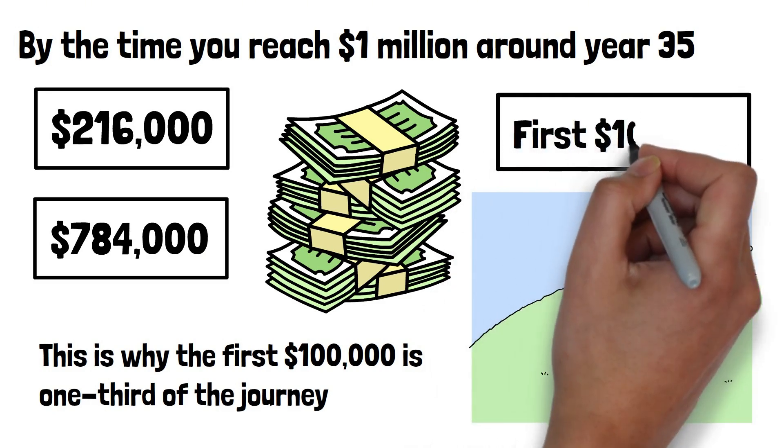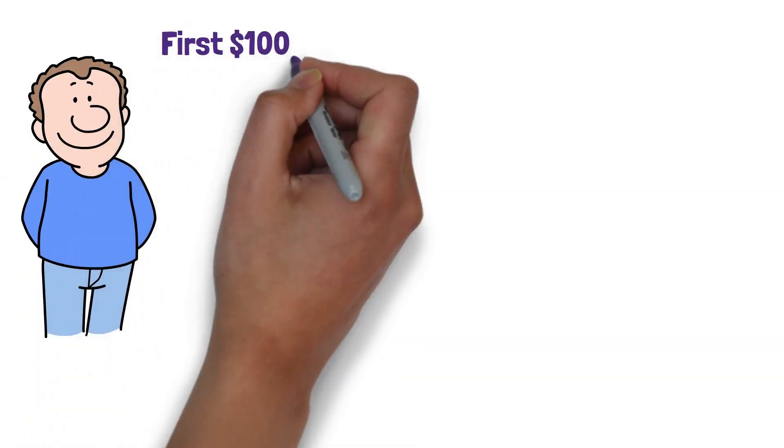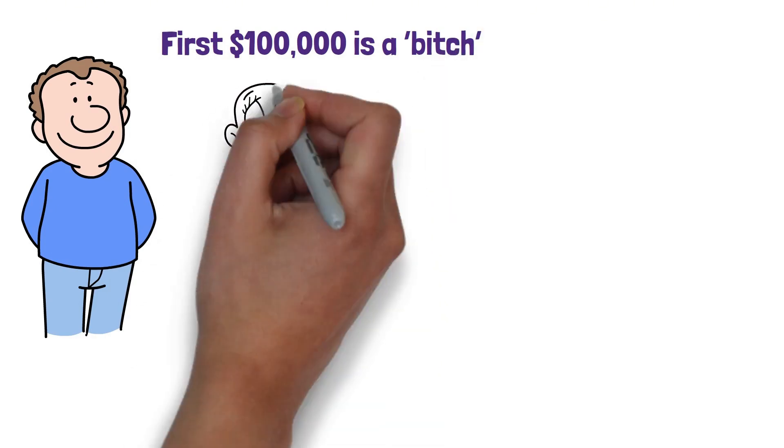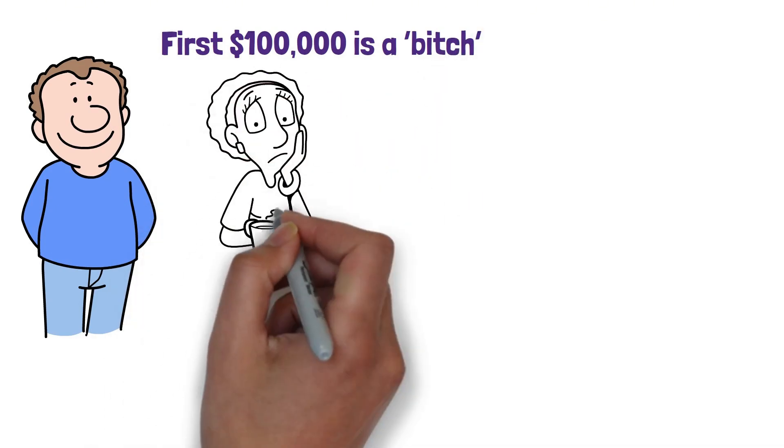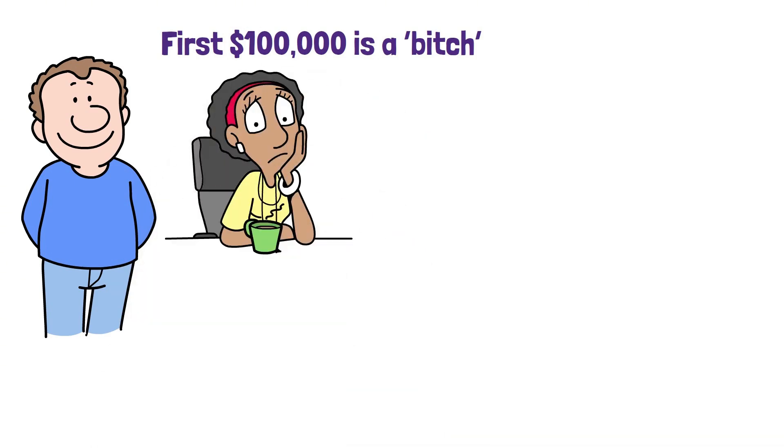Of course, the first $100,000 is also the hardest. Charlie Munger didn't sugarcoat it. He said the first $100,000 is a bitch. And he was right. It's the most mentally and emotionally difficult part of the wealth journey. Not because the math is hard, but because growth is painfully slow and almost all of it comes from your own effort.